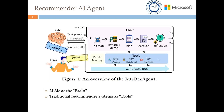The first pillar of our work is the Recommender AI Agent. This is an LLM-driven AI agent where the large language models act as the brain responsible for user interaction as well as for reasoning, planning, and task execution. Traditional recommender models act as tools, enhancing the large language models by providing specialized capabilities.